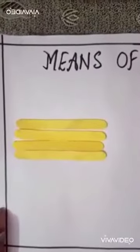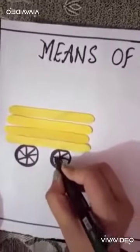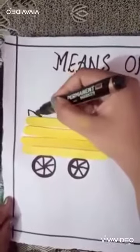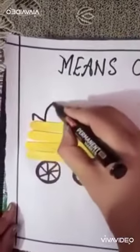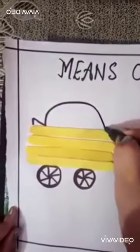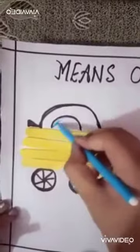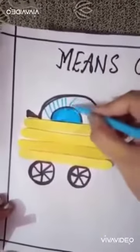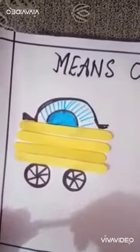Now we will draw the tires. You can also color them black. Now we will draw the top of the car, like this. I am going to color it blue. So this is our car.